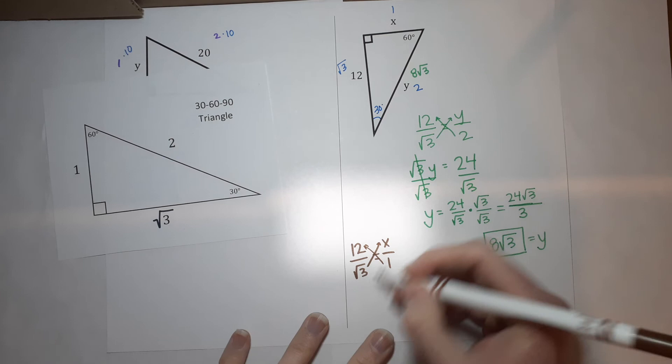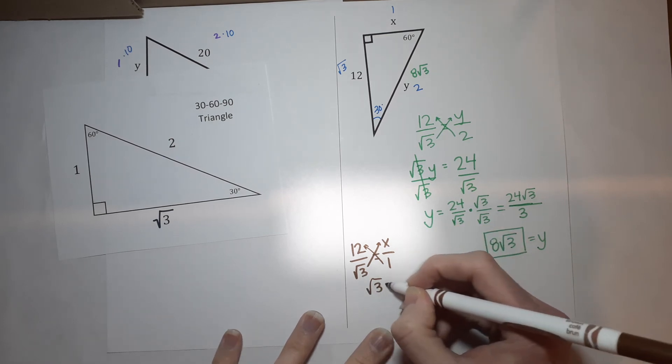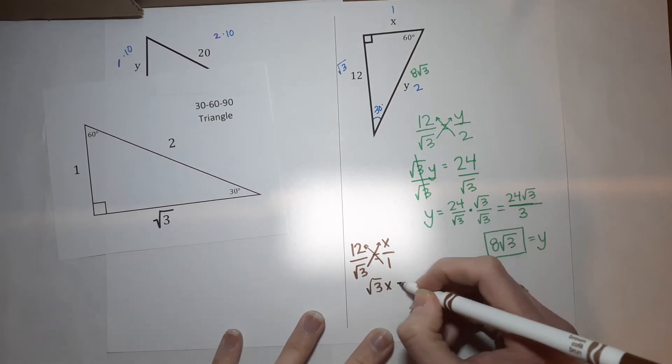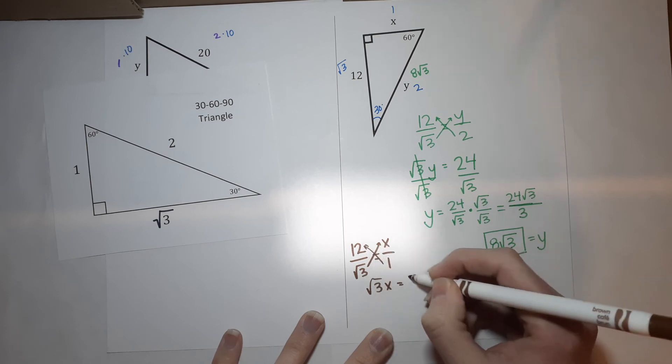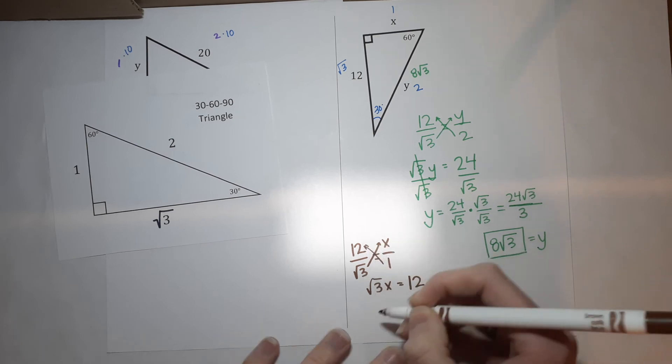So you're left with the square root of 3 times X. I'm still on the screen, right? Yes. Equals 1 times 12, which is 12. All right. I want X alone.